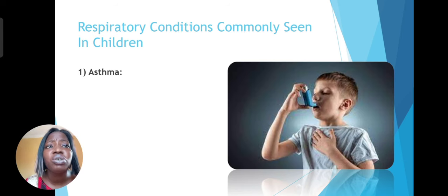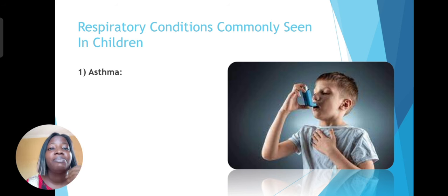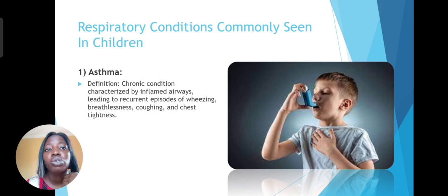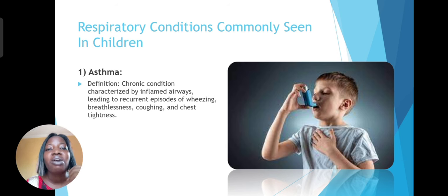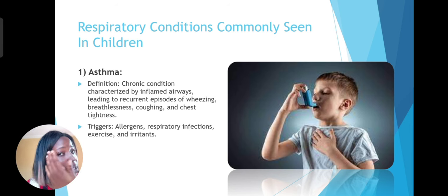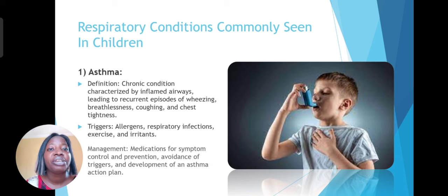Now let's look at respiratory conditions commonly seen in children. We start by looking at asthma, which is a chronic condition characterized by inflamed airways, leading to recurrent episodes of wheezing, shortness of breath, coughing, and tightness of the chest. Triggers are usually allergens — where the child is allergic to some particles that may be in the air — as well as respiratory infections and irritants. To manage this, medications are given to control symptoms, and of course the child should avoid allergens, the things that trigger the asthmatic attack.